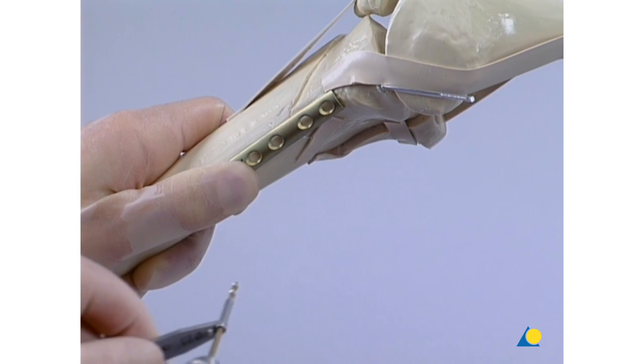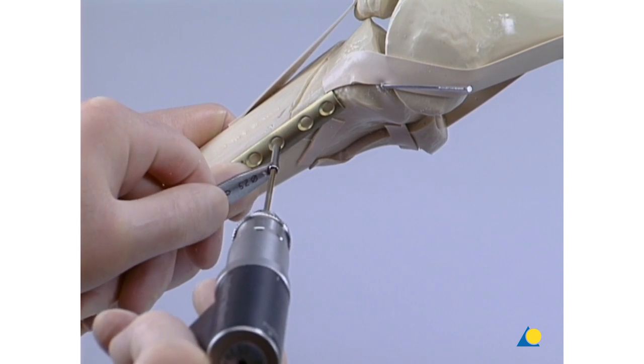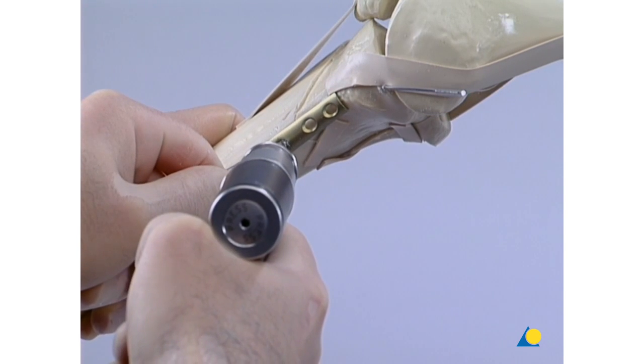Next, a 2.5-millimeter hole is drilled, just distal to the apex of the fracture, using the appropriate drill guide.